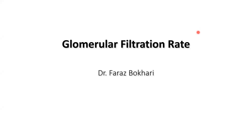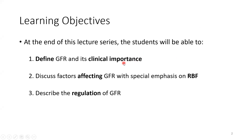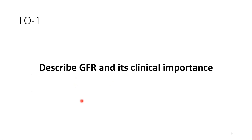As-salamu alaykum students. This lecture is a continuation of our kidney renal physiology lectures and today we start part one of glomerular filtration rate. Our objectives are three: we will define GFR with its normal statistics, look at its clinical importance, discuss factors which affect it, and at the end we'll discuss regulation of GFR. Estimation of GFR along with the concept of clearance will be done in the second lecture.